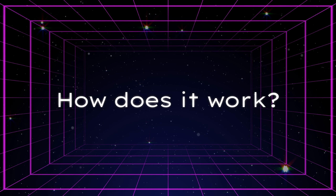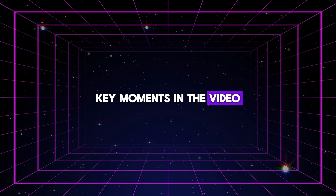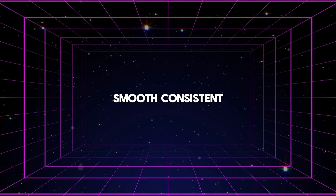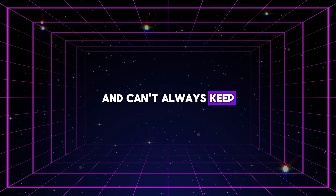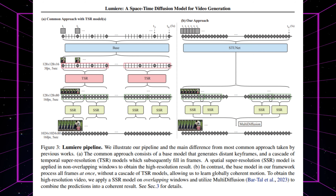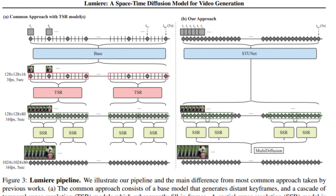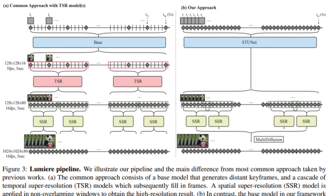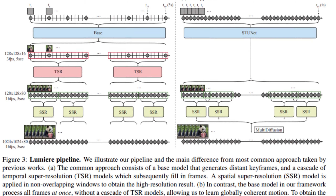Most video-making AI models use a step-by-step approach — they start by creating key moments in the video and then fill in the gaps between these moments. While this method is good for saving memory, it's not the best for creating smooth, consistent motion in videos, because the models can get confused with fast movements and can't always keep up with changes over the entire length of the video. To tackle these issues, a new approach called the Space-Time Unit architecture has been introduced. It's designed to process the entire duration of the video at once, rather than in separate steps, and is effective in creating smoother motion. This approach wasn't used much before in AI video-making models, which mostly focused on processing one frame at a time.